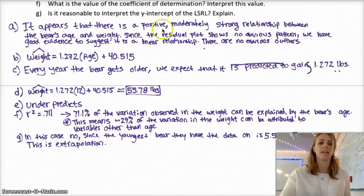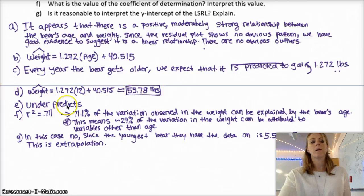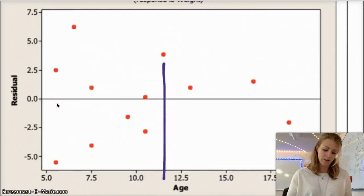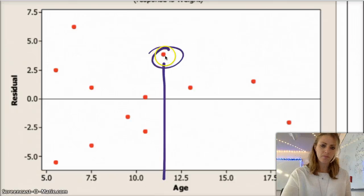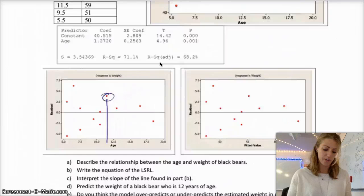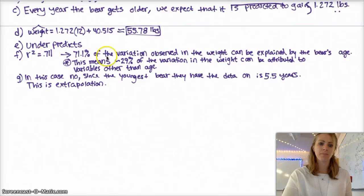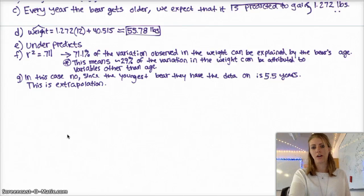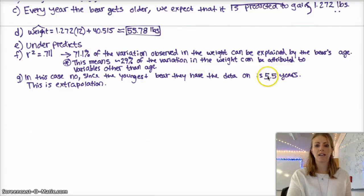And then this is a prediction for a 12-year-old bear. We would expect it to be about 56 pounds. And then this is a, I chose under prediction because if you look at the residual, it looks like this bear is the 12-year-old bear. And so its residual is positive, which means the line of best fit, which is, like, down here, is an underestimate of the true value at that point. And then r-squared is the variation observed in the weight can be explained by the bear's age. And basically this means that about 29% of the variability within the weight can be attributed to variables other than age. So things that we don't, aren't thinking about. Like, maybe the mother's health or the food sources or, you know, things like that. And in this case, the youngest bear they have data on is five and a half years. So this is extrapolation.